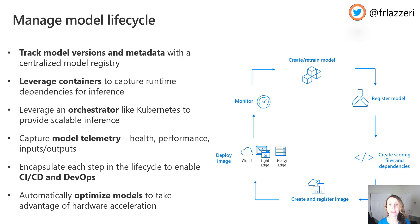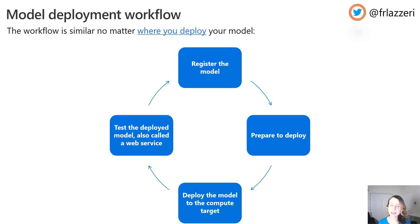All these steps are part of the model lifecycle and how you can manage it. Another important concept is the model deployment workflow. The workflow is similar no matter where you deploy your model. There are four important steps: you have to register your model, then prepare it to deploy it, deploy the model to the compute target that you choose, and finally test the deployed model, which is also called a web service.